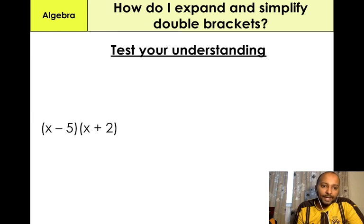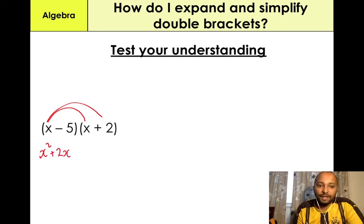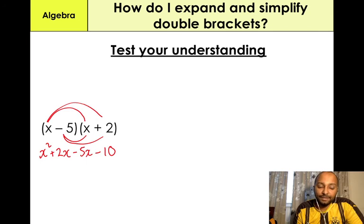We have (x − 5)(x + 2). X times X gives us X squared. X times positive 2, which is positive 2X. Minus 5 times X, which is minus 5X. Minus 5 times 2, which is minus 10. Then 2X minus 5X gives us negative 3X. So we have X squared minus 3X minus 10 — that's our final answer.